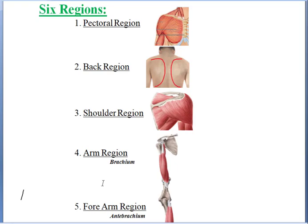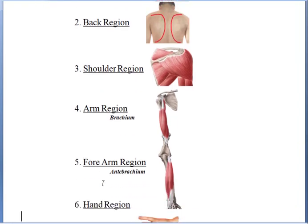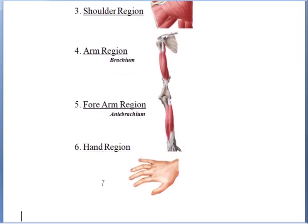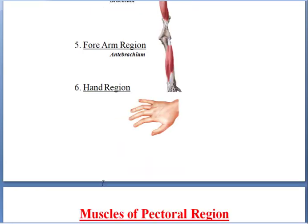In the next lecture we will move on to the muscles of the forearm. The forearm is also divided into anterior and posterior compartments — flexors and extensors — and these are further divided into superficial and deep layer muscles. We will cover those in the next lecture. See you guys — Allah Hafiz.